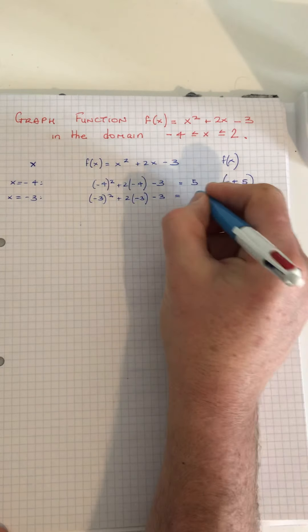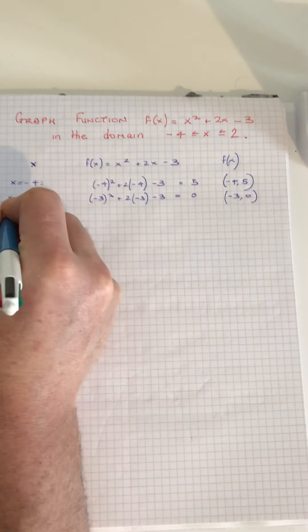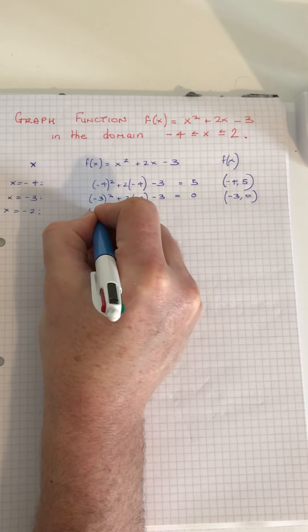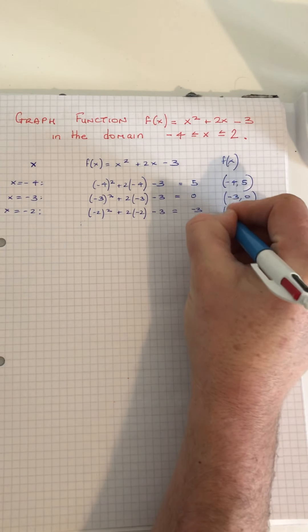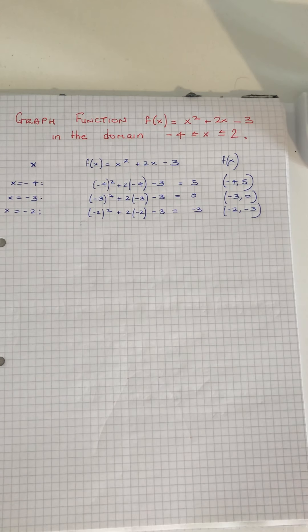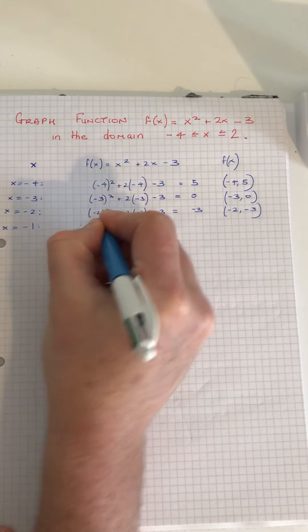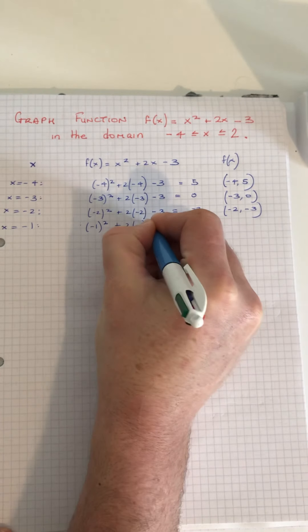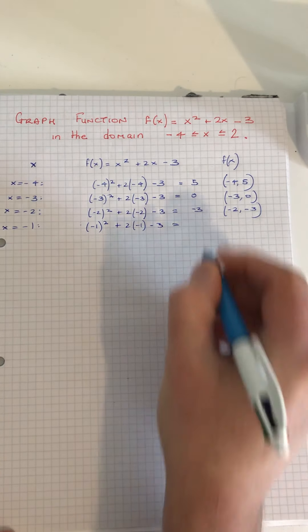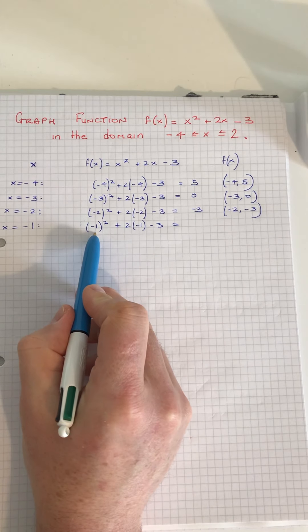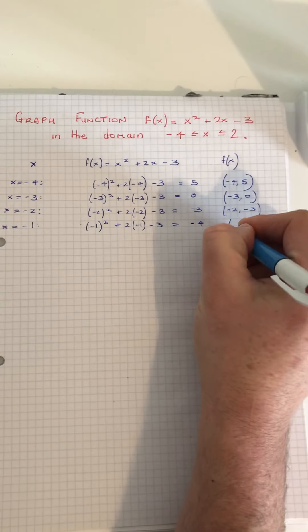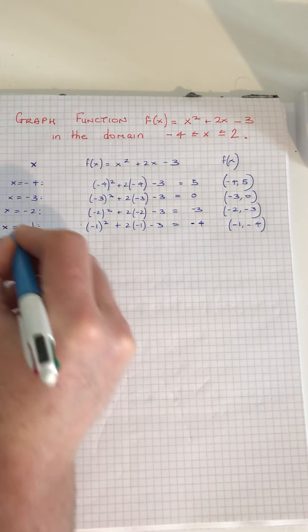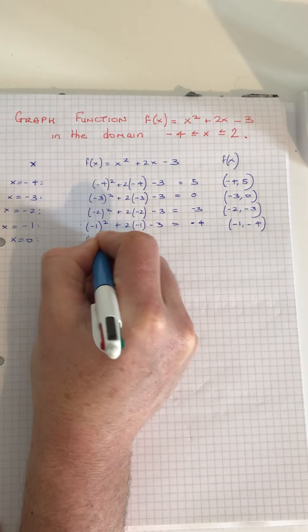So the point is (-3, 0). When x is -2: (-2)² + 2×(-2) - 3 = -3, so (-2, -3). When x is -1: (-1)² + 2×(-1) - 3 = -4, so the point is (-1, -4).